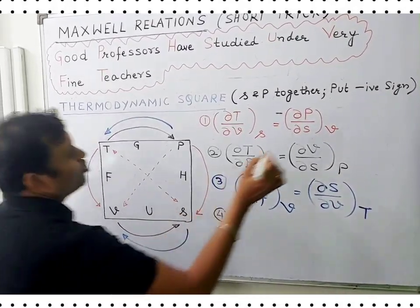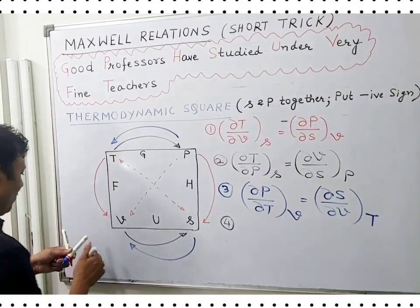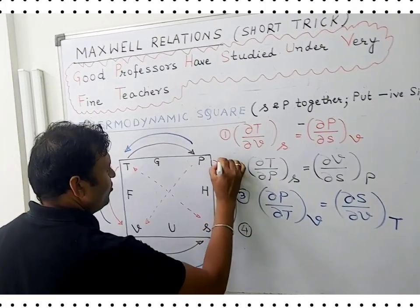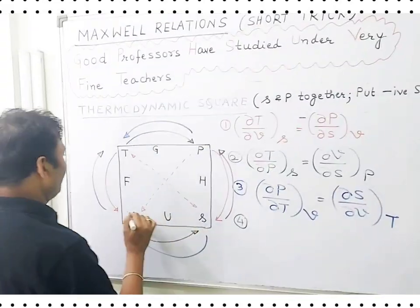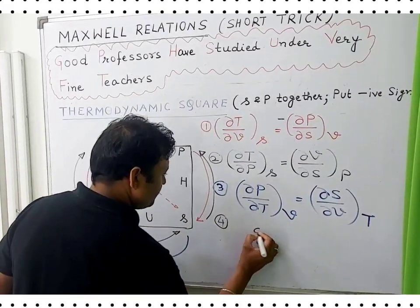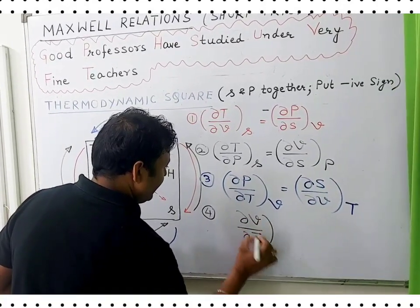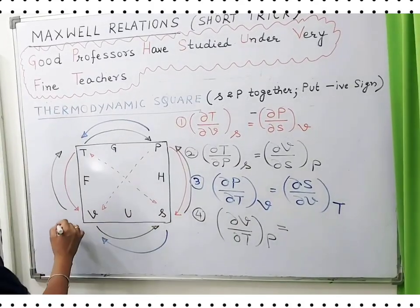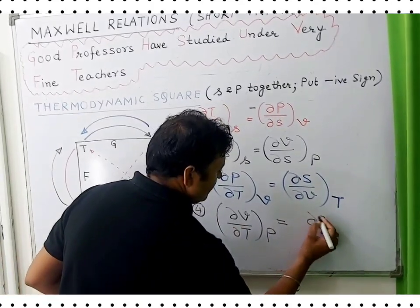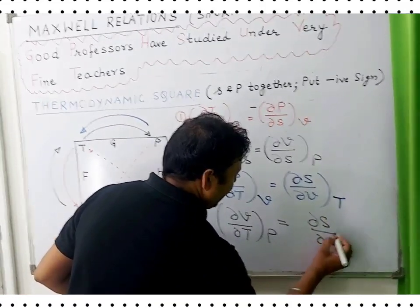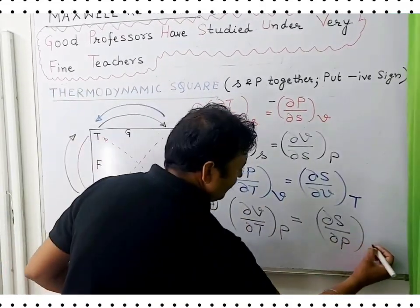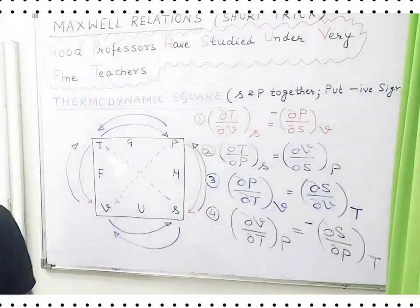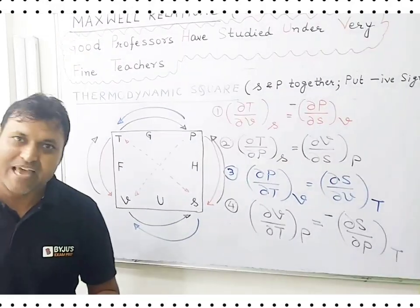For the fourth equation, whenever S and P are coming together you should put a negative sign in the expression. Using these arrows, the fourth equation says: del V by del T at constant pressure is equal to negative del S by del P at constant temperature, because S and P are coming together. This is how you can memorize the Maxwell relations.